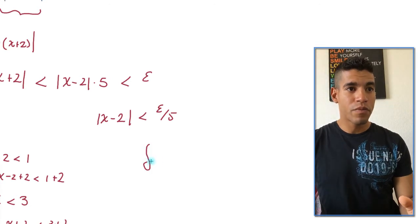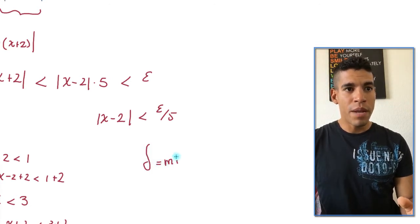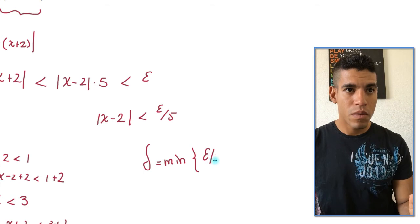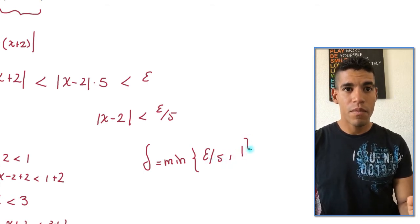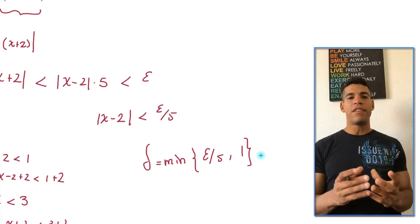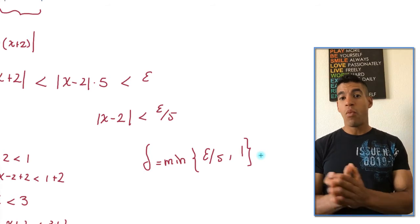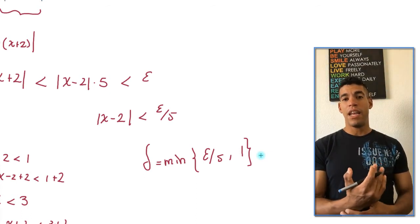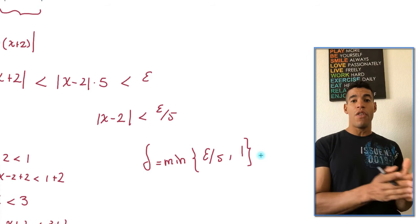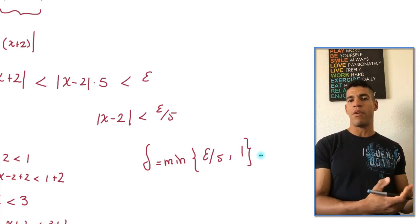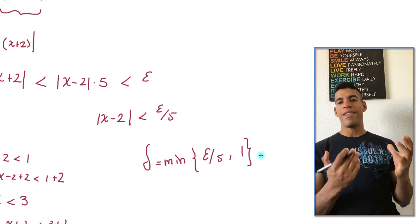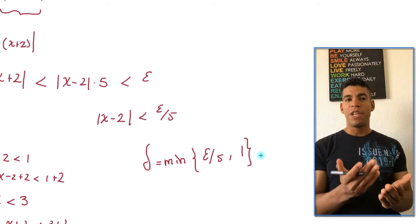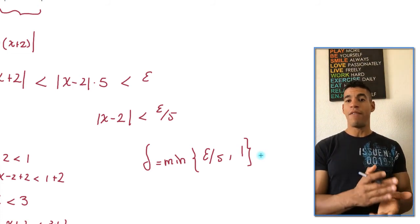We choose delta to be equal to the minimum value of what? Well, of epsilon over 5 and 1. And the reason we use this is because both of them are going to work. If it's 1, it's going to be true because then it'll just divide it by 5. And then if the number is smaller than 1, then it's also going to be true because you're going to be using epsilon over 5. So in both cases, it's going to satisfy the inequality and you're going to have the condition. And that's all we need. We just found a delta that's going to satisfy the condition for every epsilon that I choose.